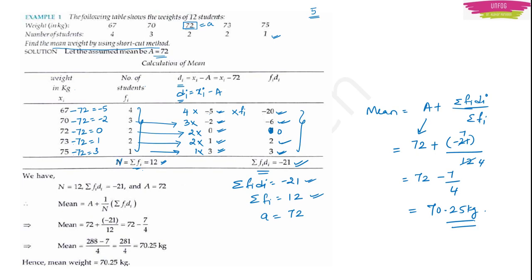So the mean weight is 70.25 kg. In MCQ exams, you can use any method — the answer will be the same. But you need to practice and be good at whichever method you choose. That was one example of finding arithmetic mean using the shortcut method.